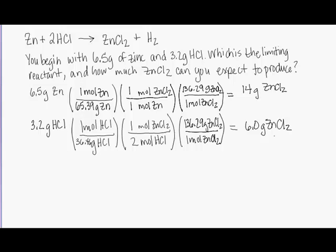Now to determine the limiting reactant. The limiting reactant in this problem is the one that will produce the least zinc chloride. In this case, HCl will produce 6 grams of ZnCl2, while the amount of zinc we have would produce 14 grams. So HCl is our limiting reactant.